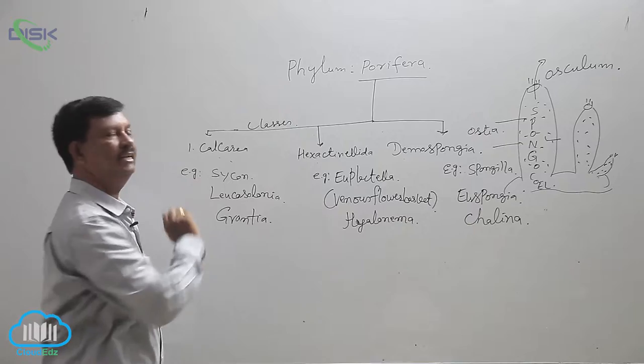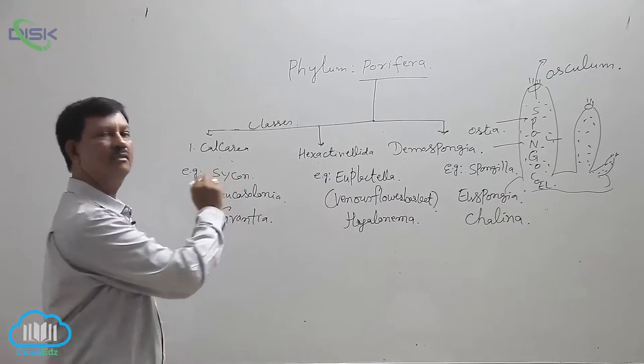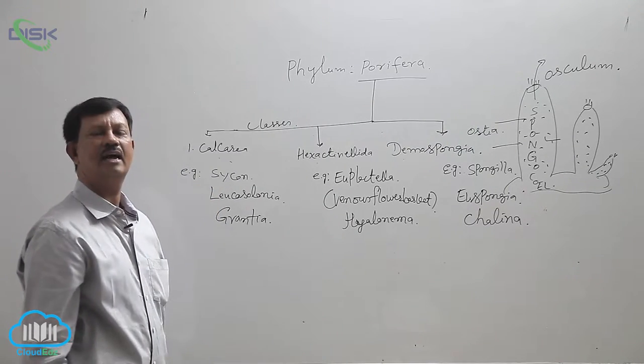The skeleton is made of calcareous spicules. Examples are Sycon, which is also known as Scypha, Leucosolenia, and Grantia.